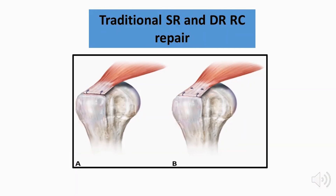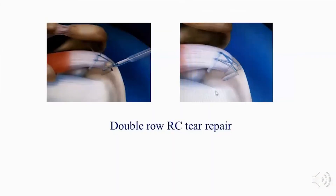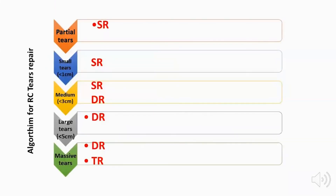Repair techniques include traditional single row repair or double row repair. A variant of single row is the Mason-Allen repair, which incorporates a rip-stop and mattress suture for better fixation of the rotator cuff tendon on the greater tuberosity. The repair algorithm recommends: single row for partial tears and small tears less than 1 cm; single or double row for medium tears of 1–3 cm; double row for large tears up to 5 cm; and double or triple row for massive tears.